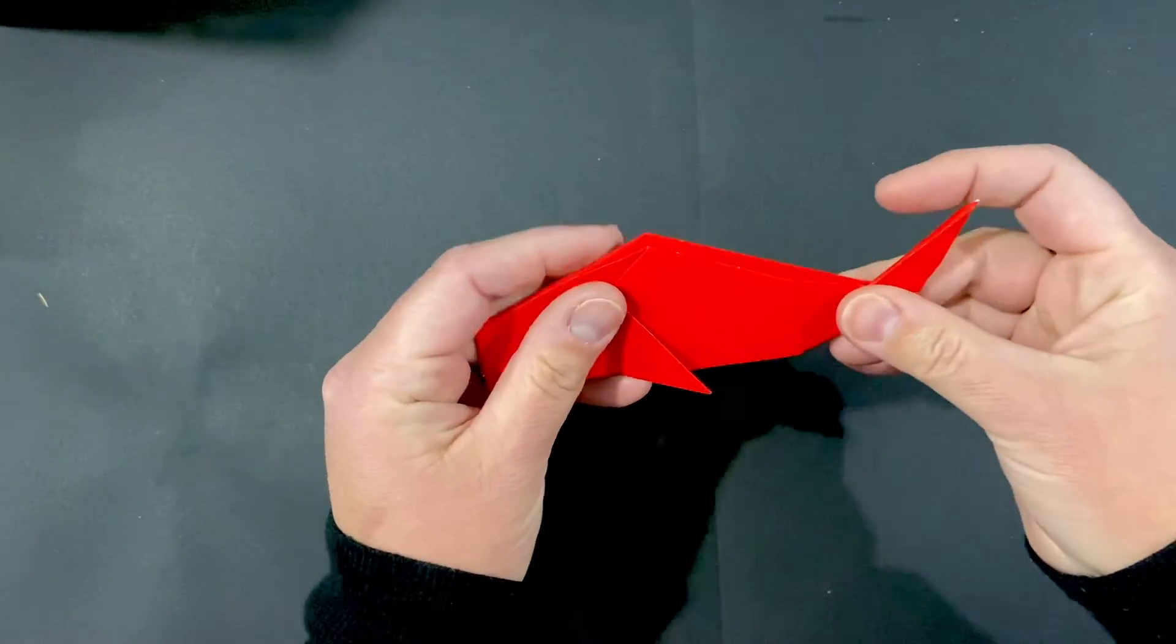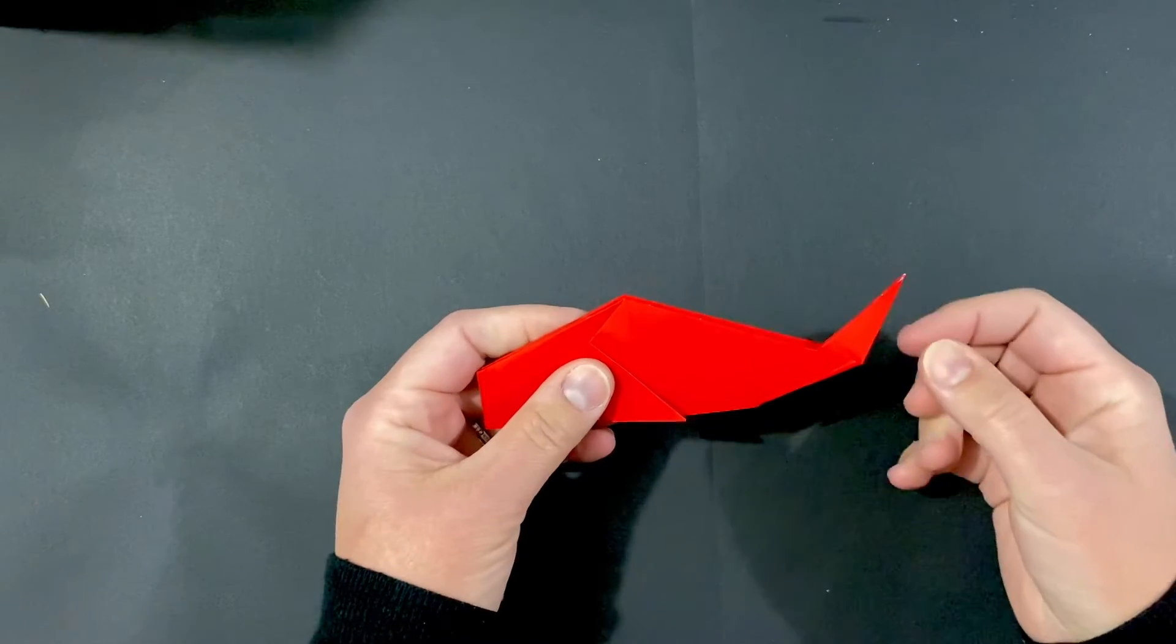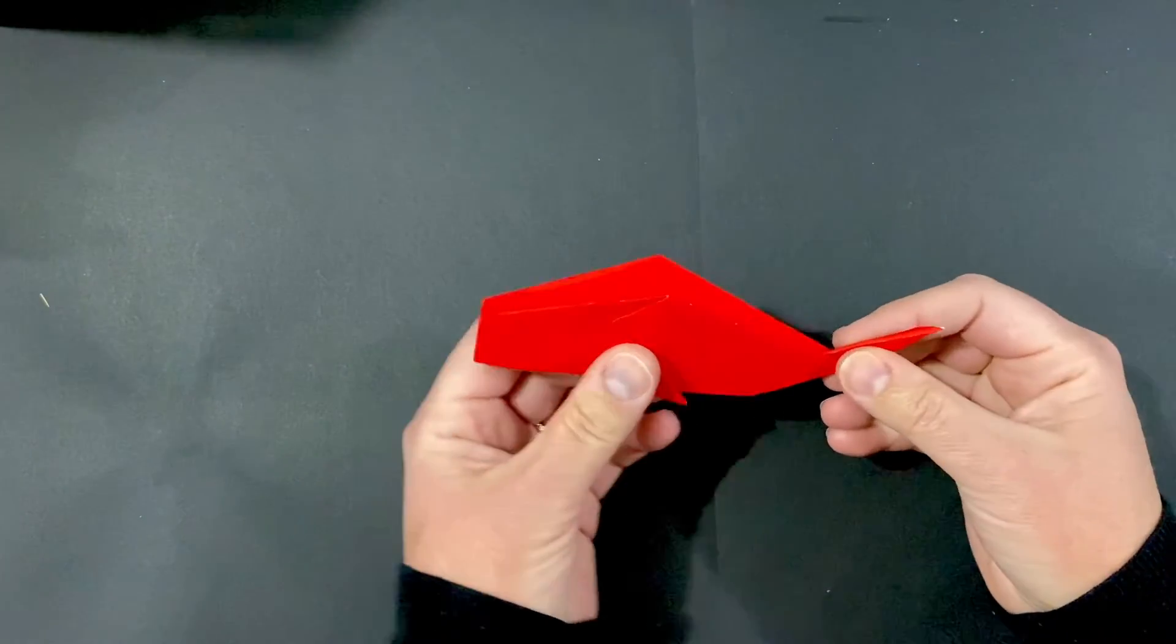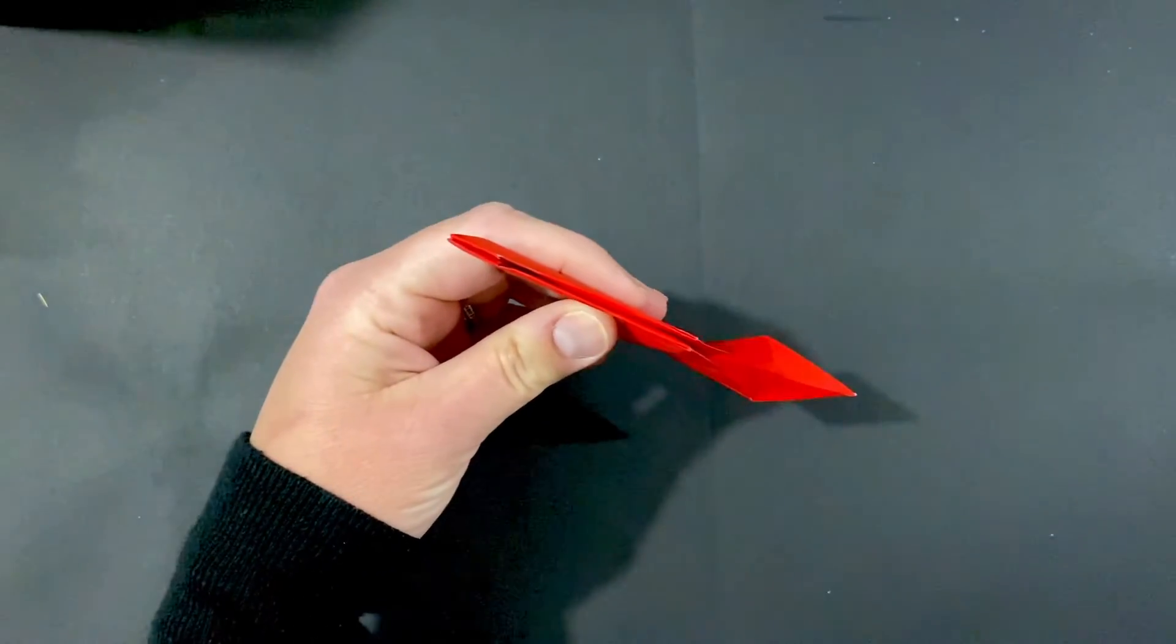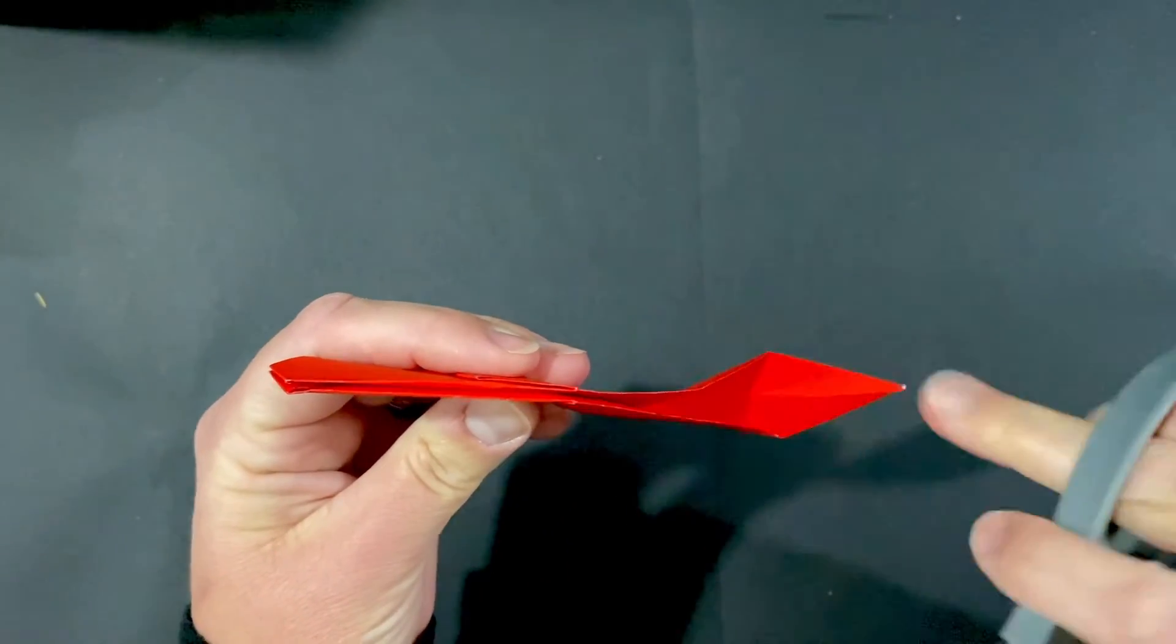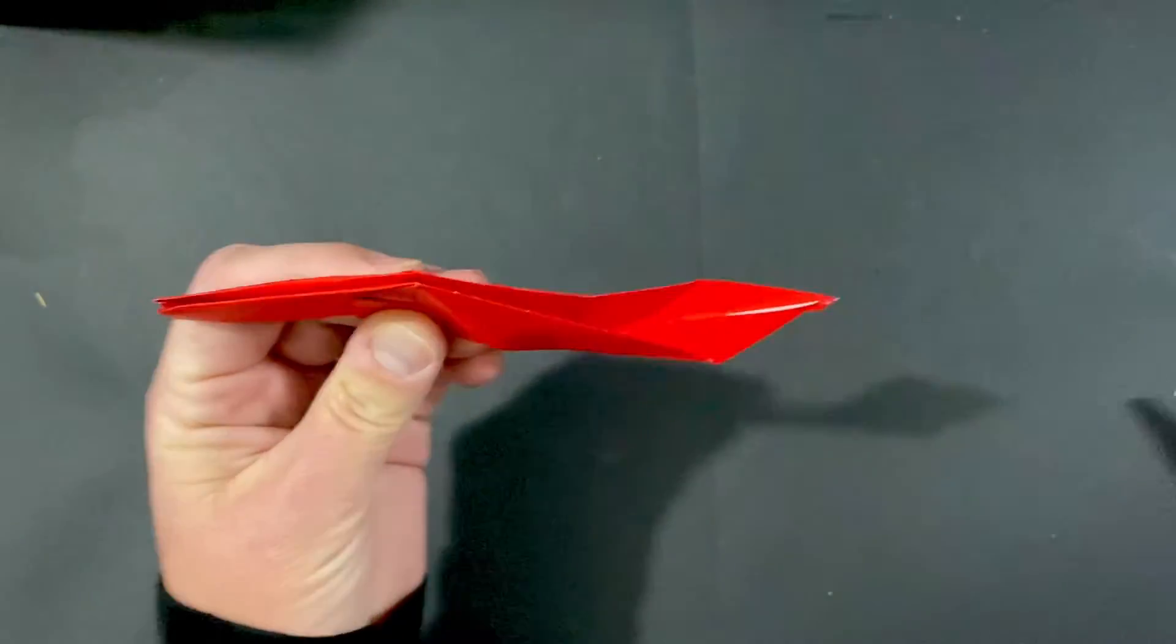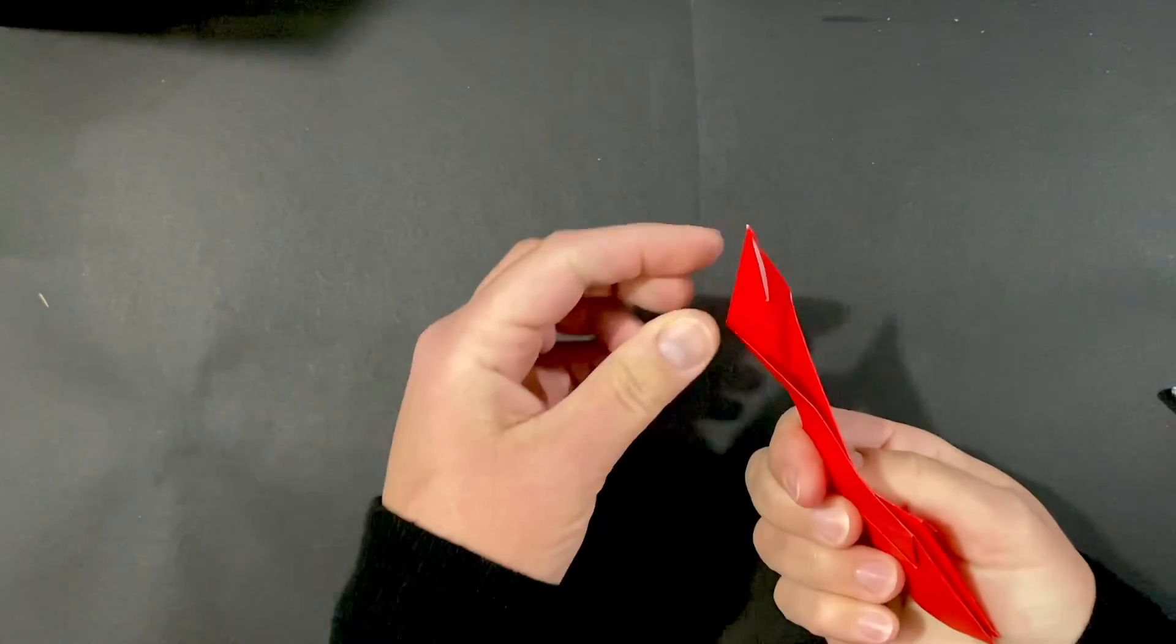Then close the whale back together. So now your whale's tail is almost done. We're going to take a pair of scissors here, and so this part right here, you can see it's just a little crease, we're going to cut just about halfway down and then fold it out.